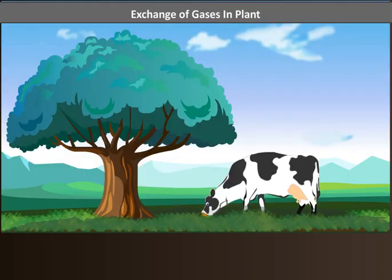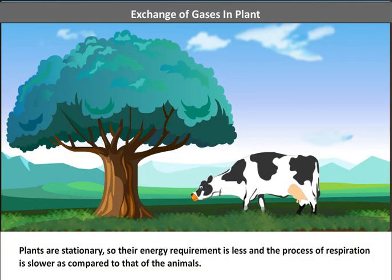Exchange of gases in plants. Plants are stationary, so their energy requirement is less and the process of respiration is slower as compared to that of animals.